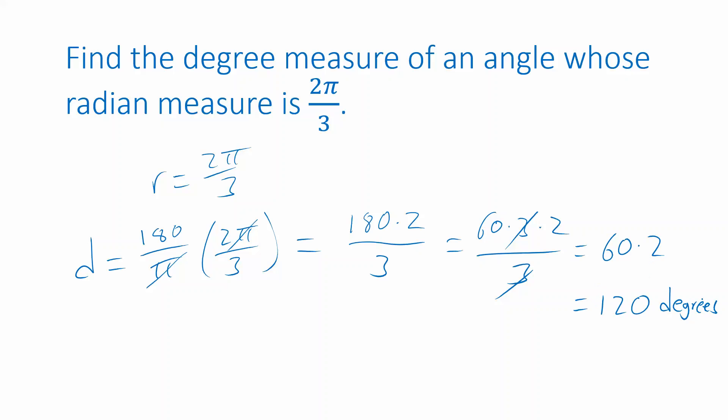So a measurement of 2π over 3 radians corresponds to the same angle as 120 degrees.